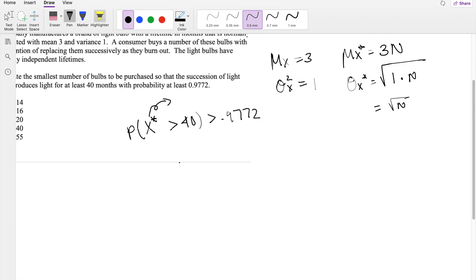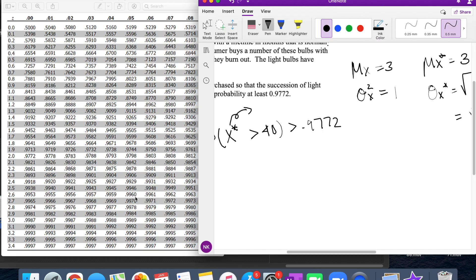And what is 0.9772 on the z table? 0.9772 corresponds to 2. But what we're looking for is z is greater than such number, so then z must be equal to negative 2. Because if z is greater than negative 2, this value right here is going to be 0.9772.